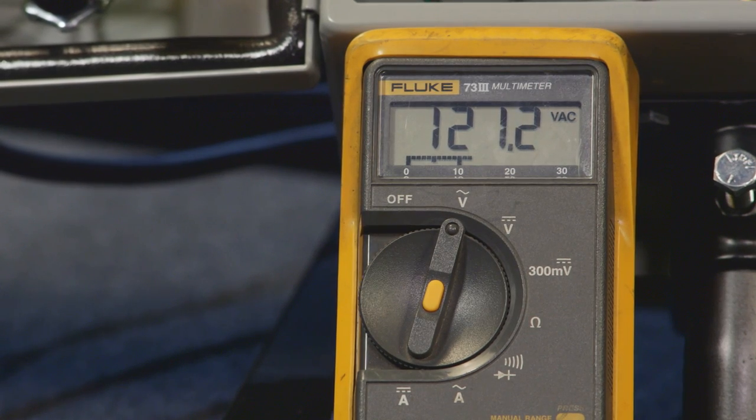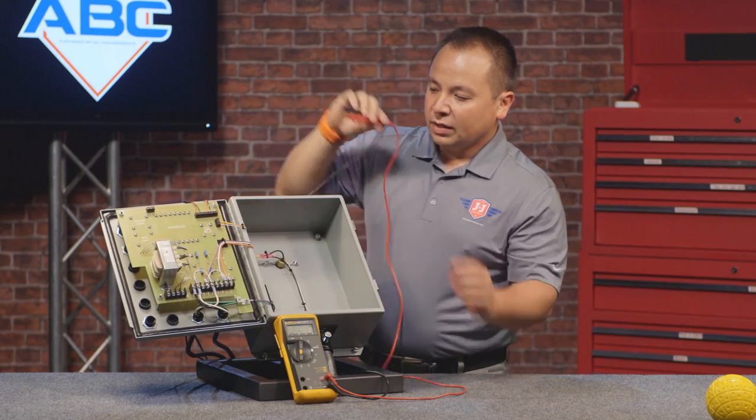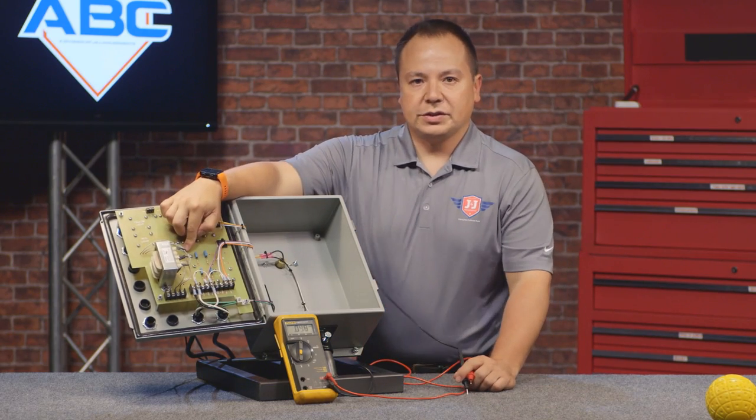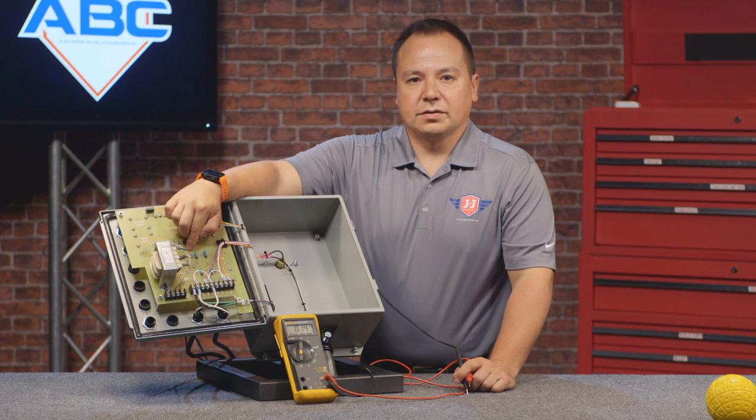So right now we're getting 121.3, which is perfectly fine. If you are not getting power at this position, you may have a loose screw on the relay, or you may have a bad trace on the circuit board.